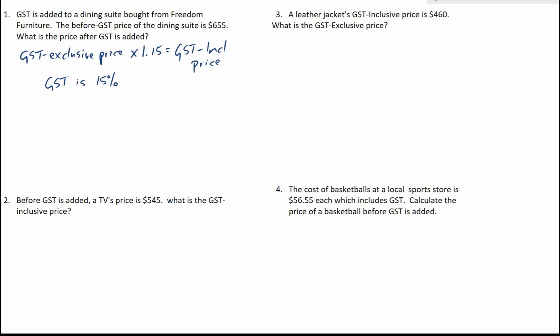If we look at number 1 here, GST is added to a dining suite bought from Freedom Furniture. The before-GST price of the dining suite is $655. What is the price after GST is added? The exclusive price — that is the price without GST — is $655. So we are just going to use our formula: $655 times 1.15 will give us the GST inclusive price, or the price after GST is added.